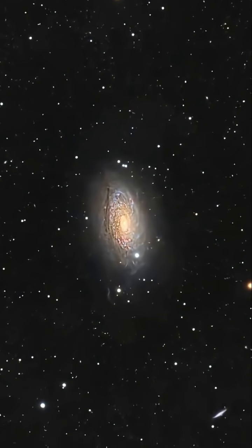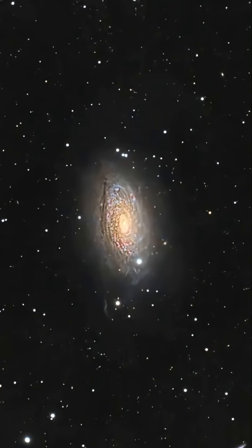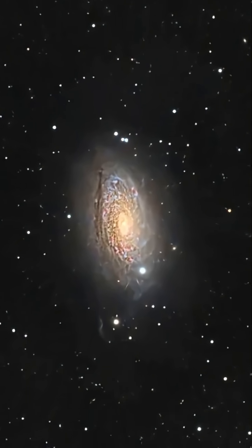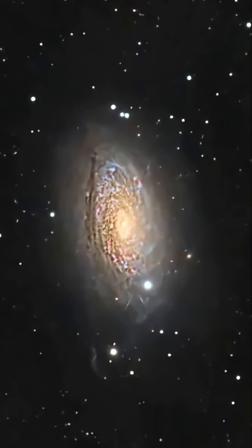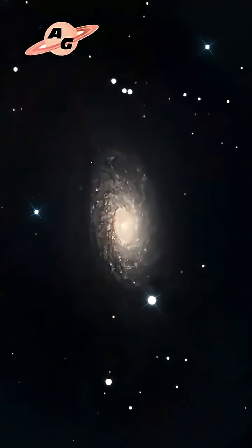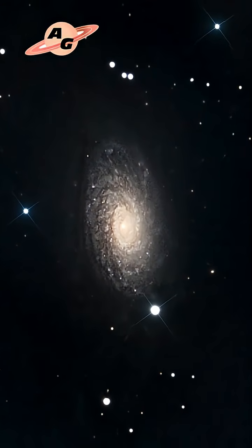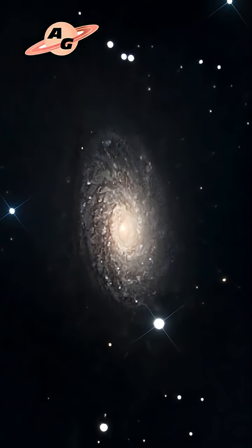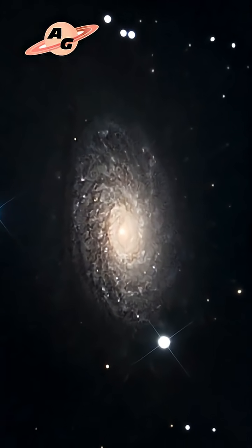The Sunflower Galaxy, catalogued by French astronomer Charles Messier as M63, is located in the constellation Canes Venatici and is approximately 28 million light-years from Earth. In the new general catalog, the Sunflower Galaxy is catalogued as NGC 5055.